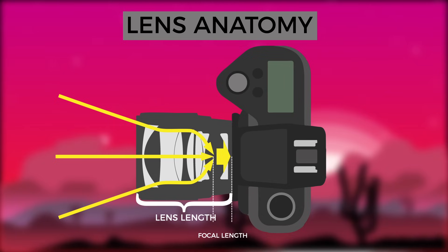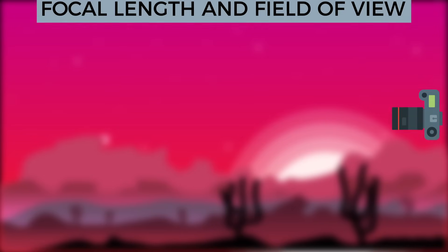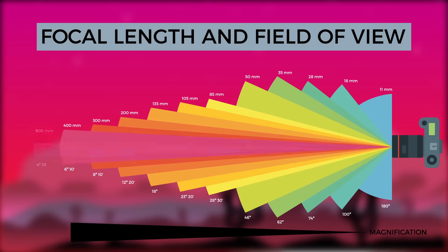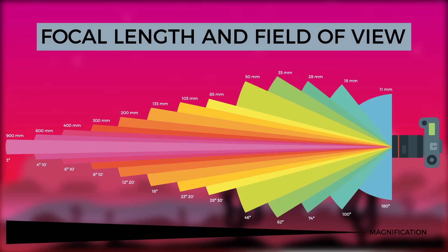So, a lens with a focal length of 24 millimeters, for example, would have light rays converging 24 millimeters above the image sensor. The focal length number tells us the angle of view — how much of the scene will be captured — and the magnification, how large a subject will appear.